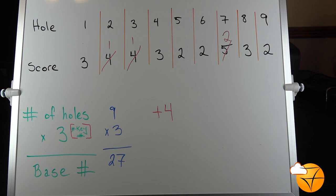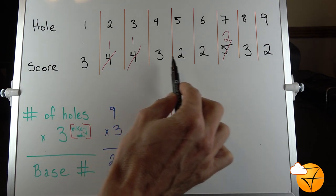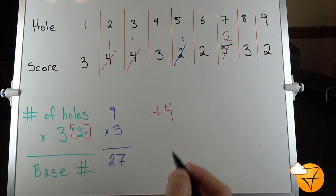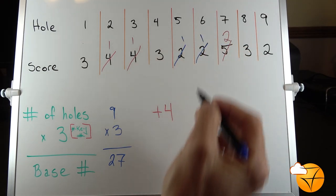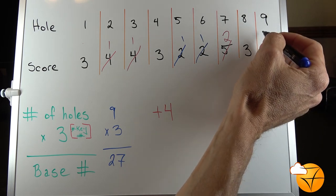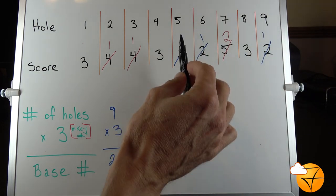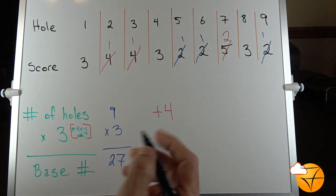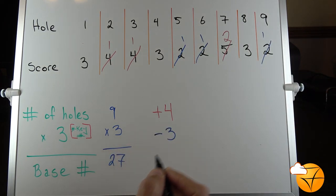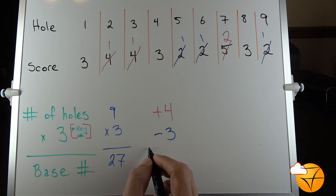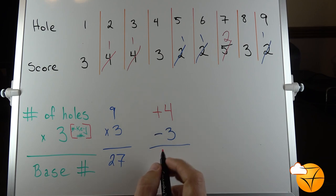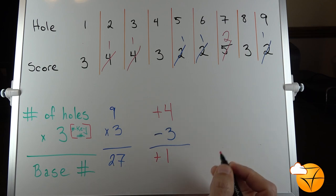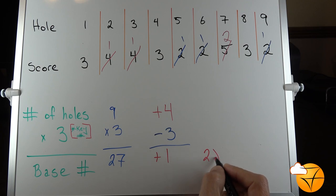Next, we're going to look at the numbers that are below the key number three. Here's a two—that's one below. Here's a two—that's one below. And here is another two—that's one below. Three. We add those up: one, two, three. That is minus three because it is below the three. We do the math and we come up with plus one, the difference. Add that to 27: 27 plus one equals 28. That is going to be your score for that round.